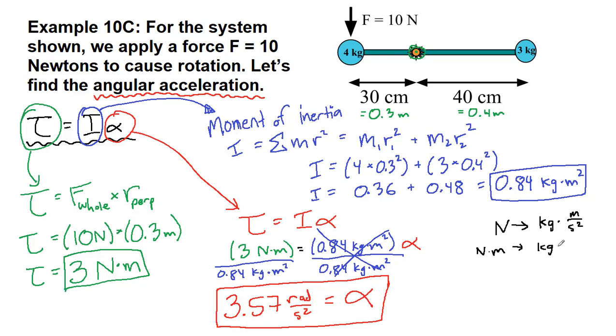So what we've done on the left side is we have kilograms times meters squared per second squared on the top, divided by kilograms times meters squared. So if we look at what cancels, the kilograms cancels on the top and the bottom, the meters squared cancels on the top and the bottom, and we have seconds squared on the bottom, and it looks like that's it.